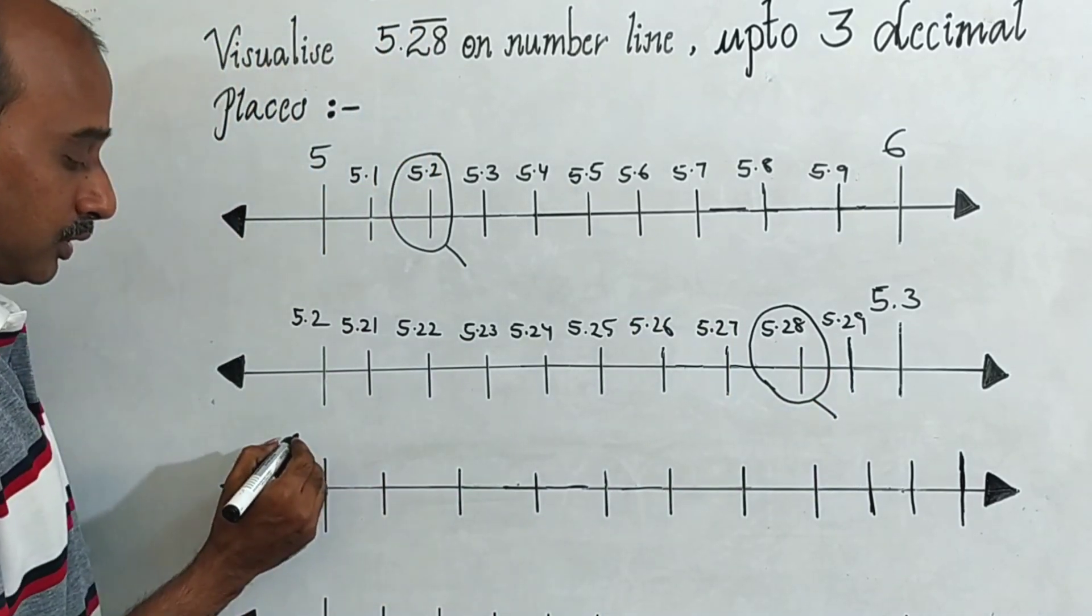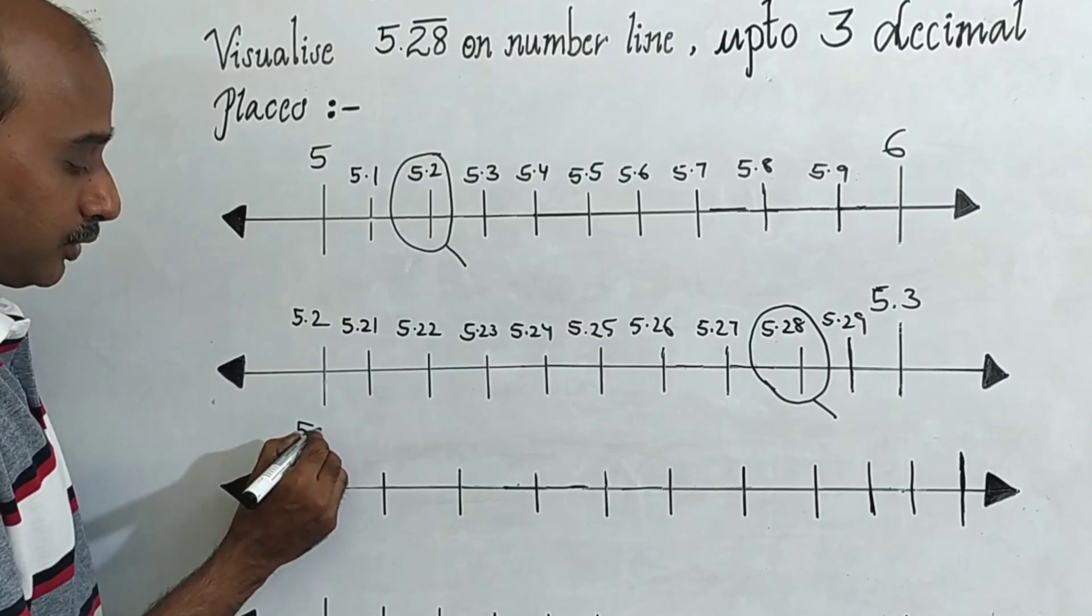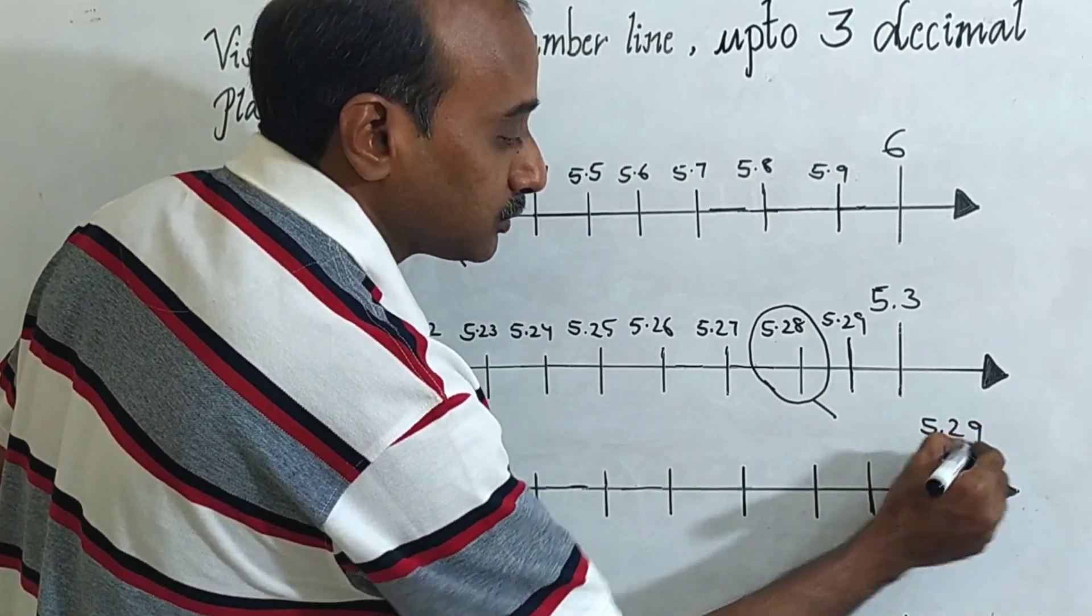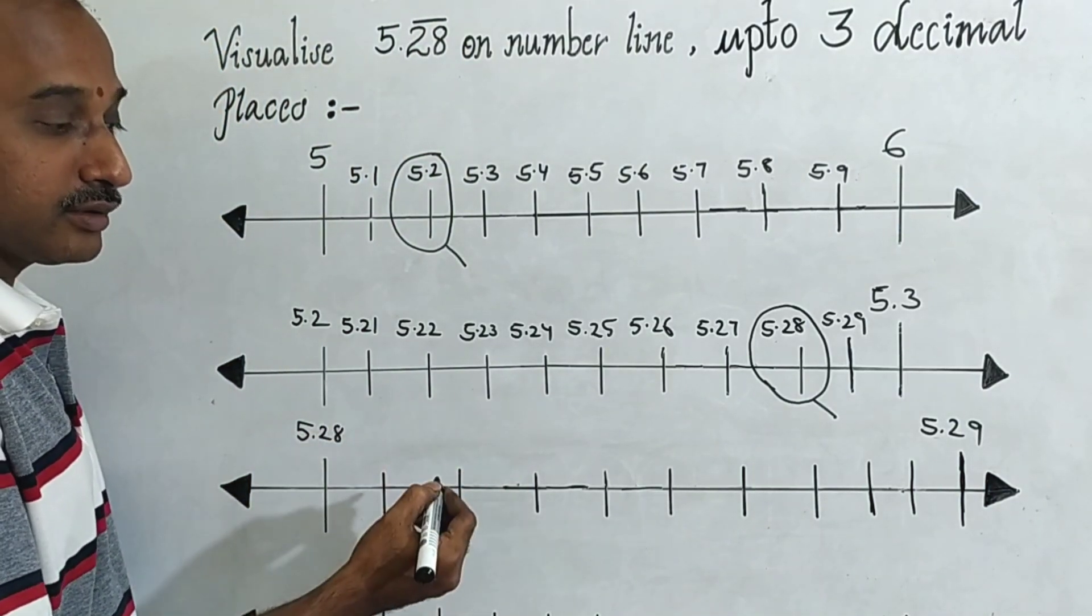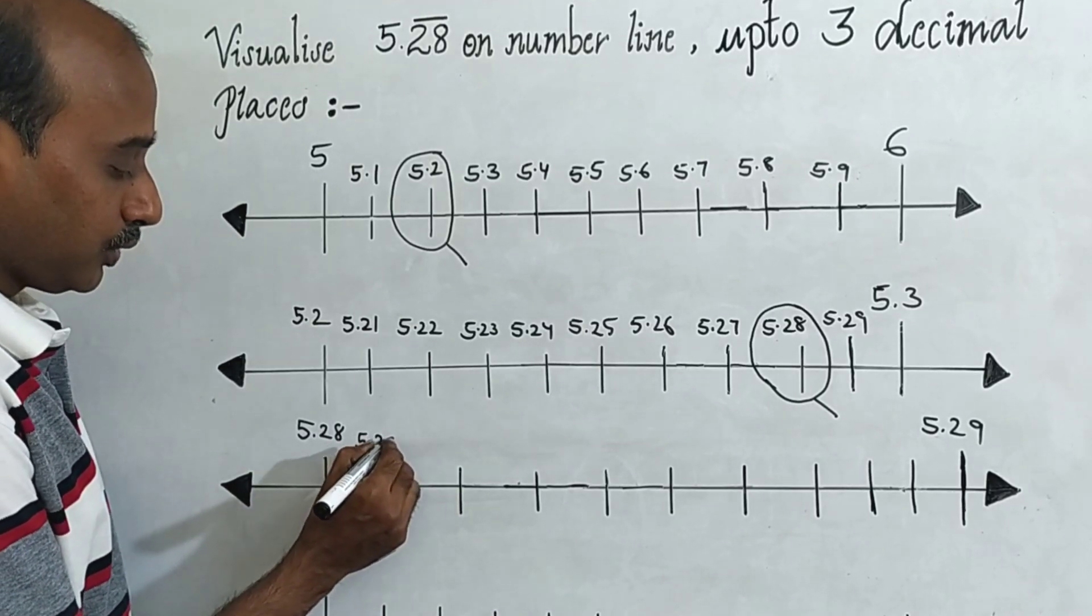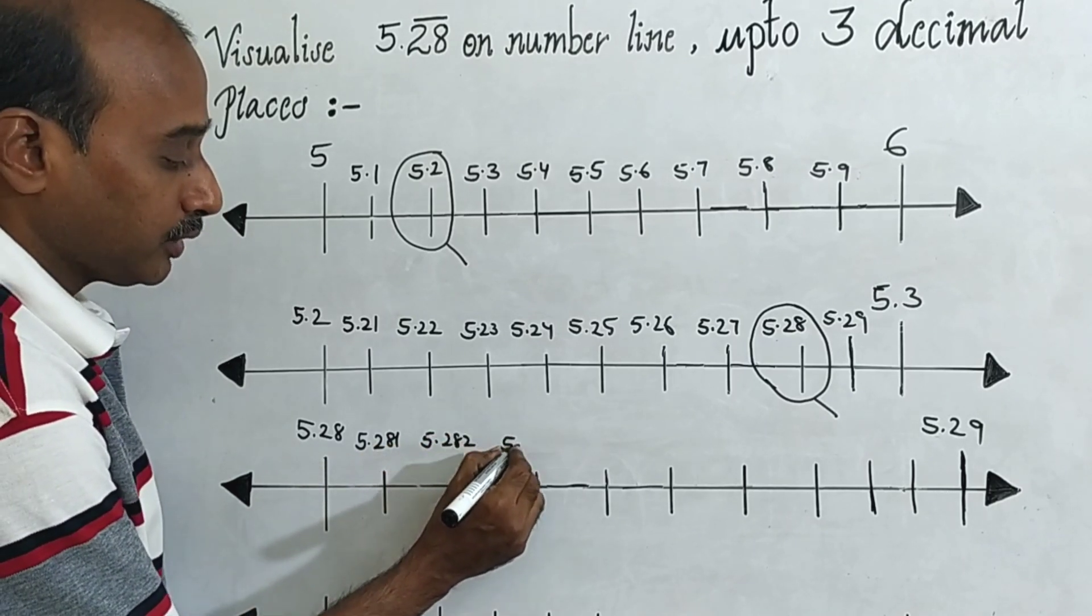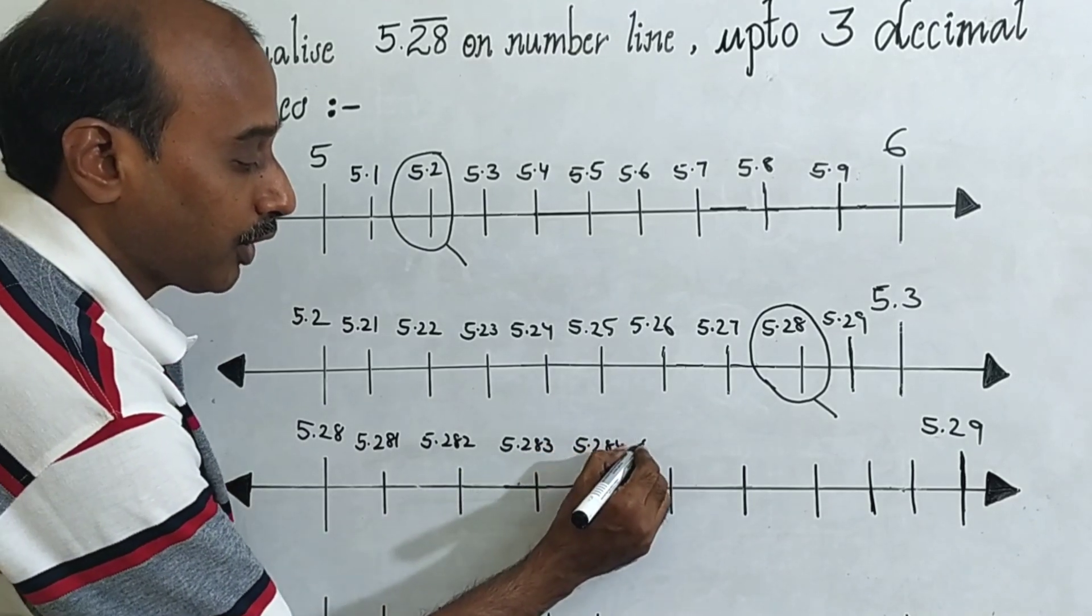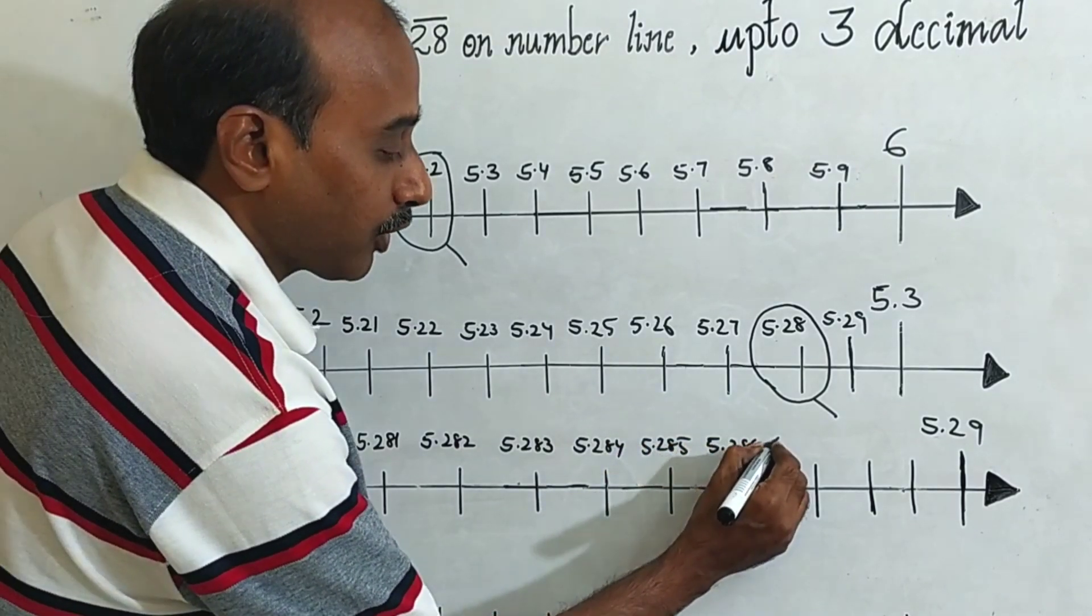5.28. Now come to, you can take on the number line 5.28 to 5.29. Now again in the similar way, we have to divide into 10 equal parts. This is 5.281, 5.282, 5.283, 5.284, 5.285, 5.286, 5.287, 5.288, 5.289.